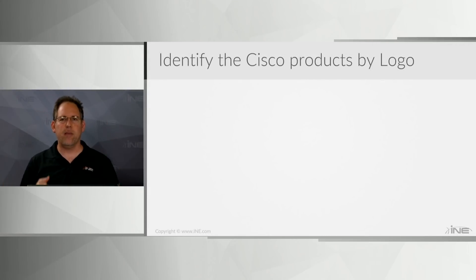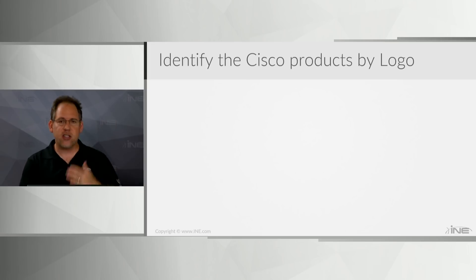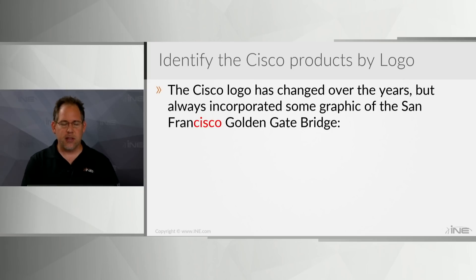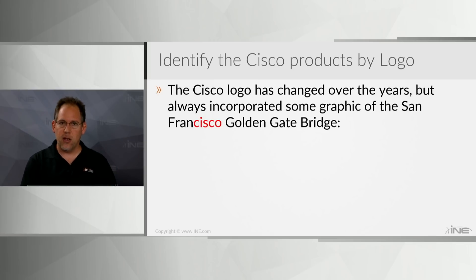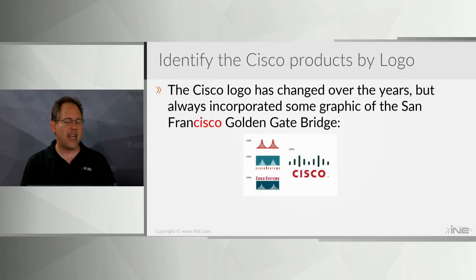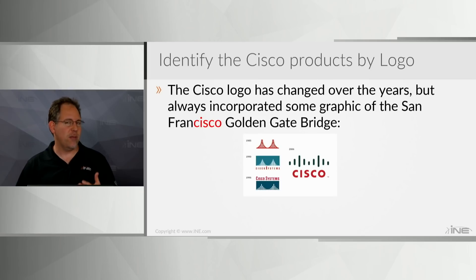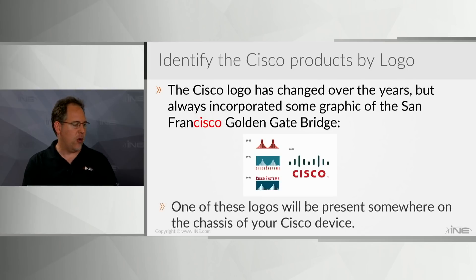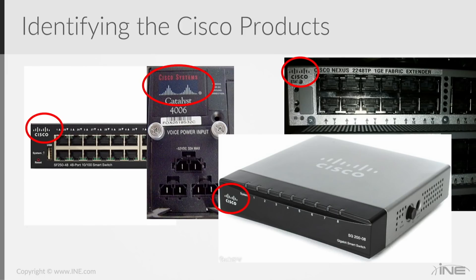Step number one: how to identify Cisco products by logo. If I've got a rack of equipment with some Cisco and some non-Cisco devices, all the Cisco equipment will have the Cisco logo somewhere on it. The Cisco logo has changed over the years — the name Cisco comes from San Francisco, referencing the Golden Gate Bridge, so it will have some indication of a bridge on it. From 1985 up to 2006, one thing has remained steady: a picture of a bridge on the logo. One of those logos will be present somewhere on the chassis of your Cisco device. Looking at screenshots of various devices, on the back, side, or front, you will see the Cisco marking.